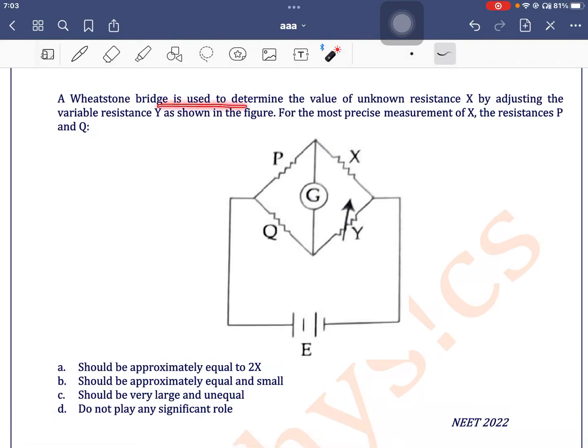A Wheatstone bridge is used to determine the value of unknown resistance X by adjusting the variable resistance Y as shown in the figure. For the most precise measurement of X, the resistance P and Q is.